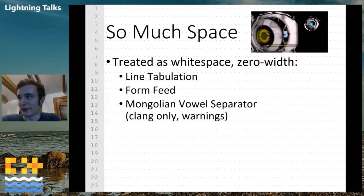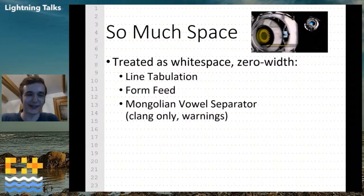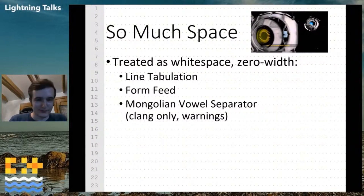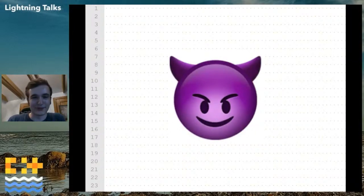There's also the reverse: white space that is zero-width, like line tabulation, form feed, and the Mongolian vowel separator, which only works in Clang and produces a warning. But the other two work without that.